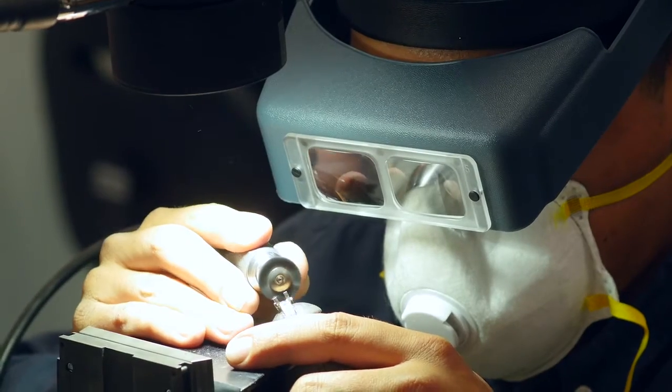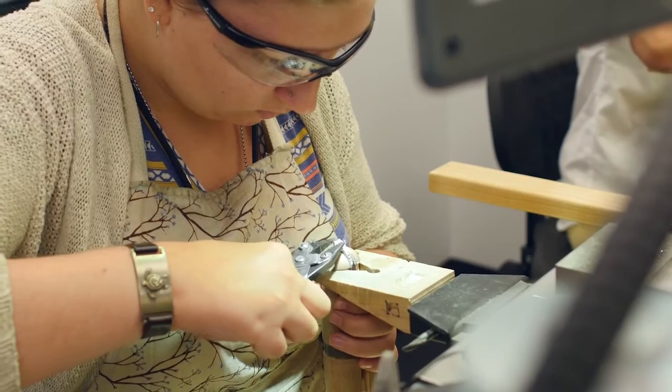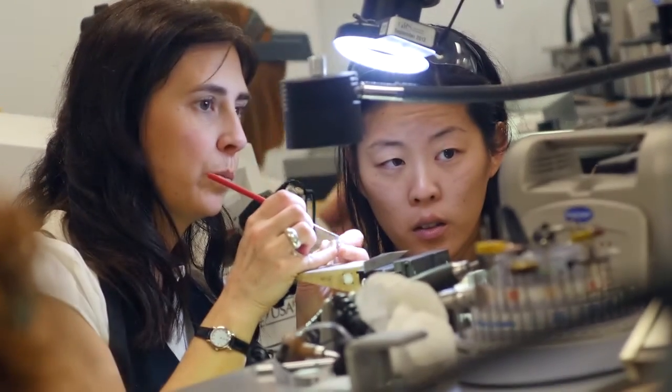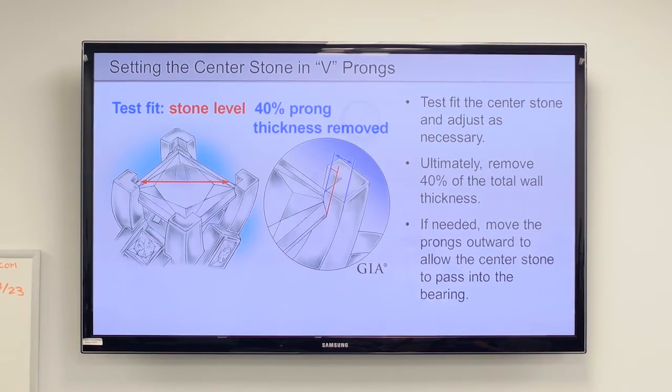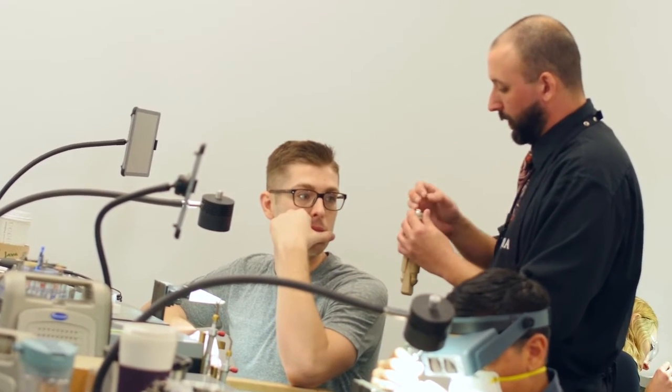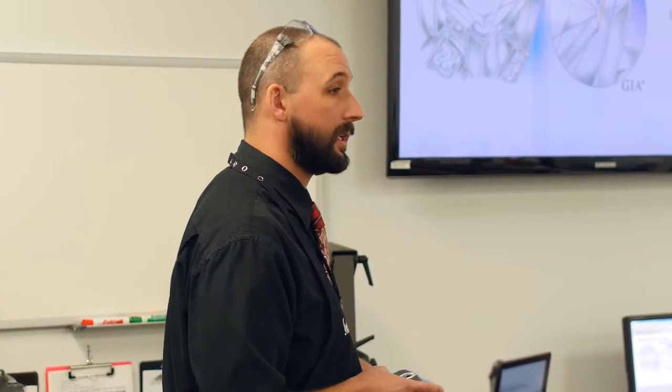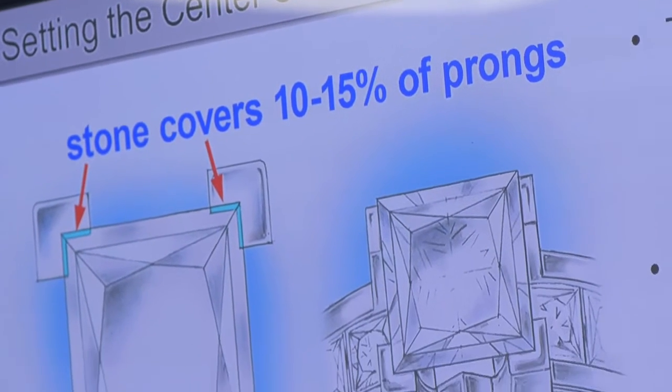40 percent is the ultimate depth, and so this is the point where you want to start making any further adjustments. If you place your stone up there and you don't think you can achieve 40 percent removal of metal and get the stone in there, you're going to have to adjust out or adjust in a little bit.